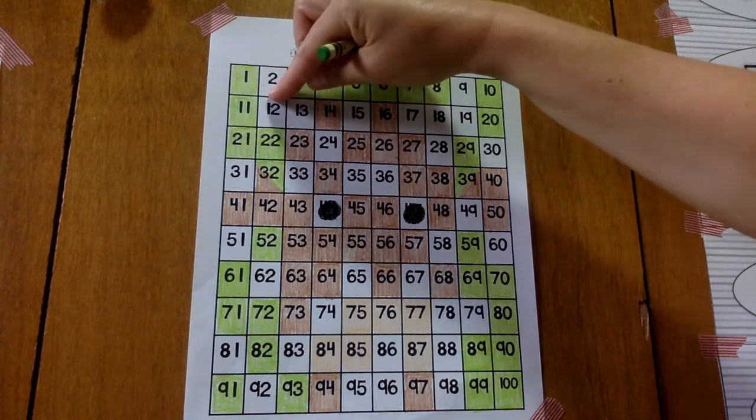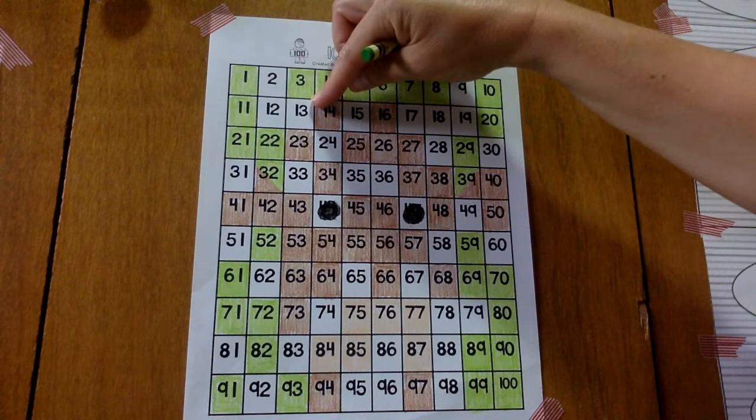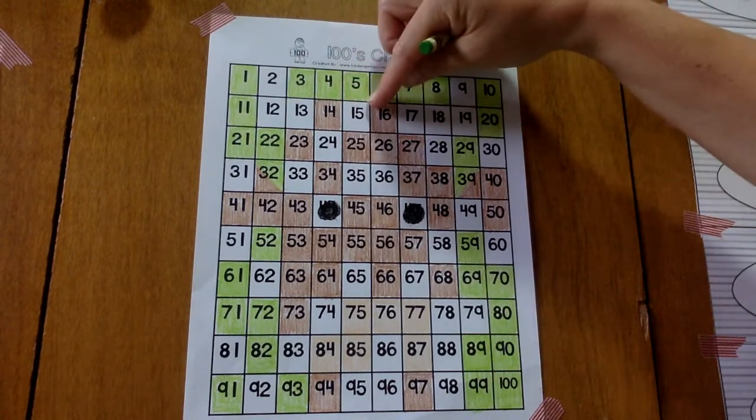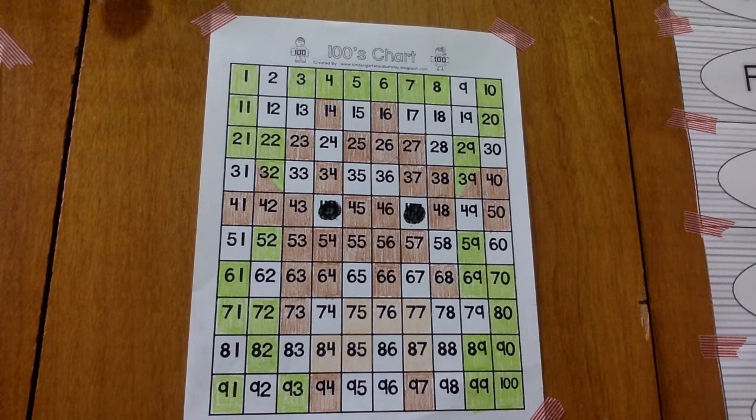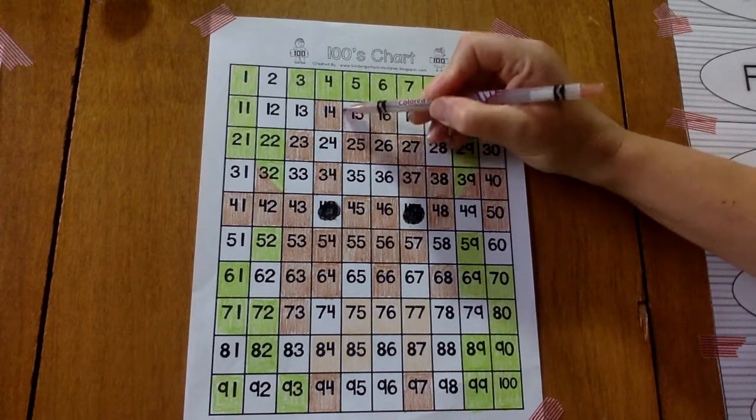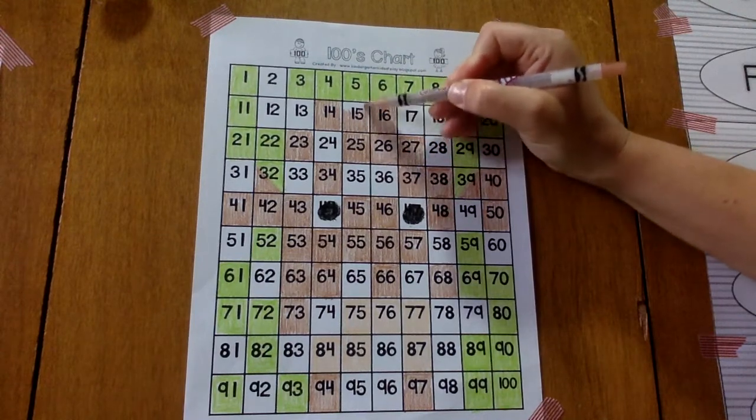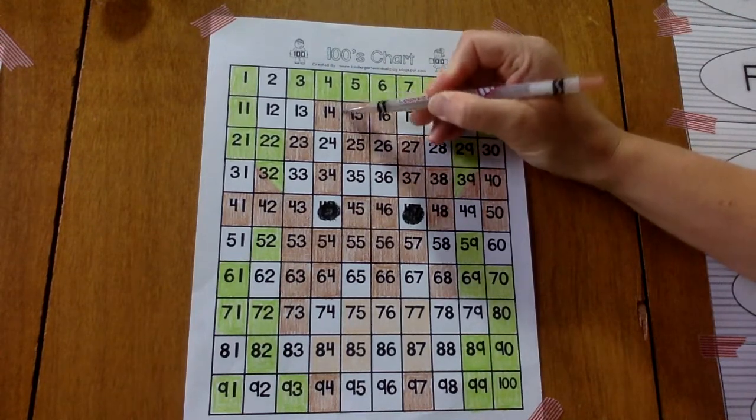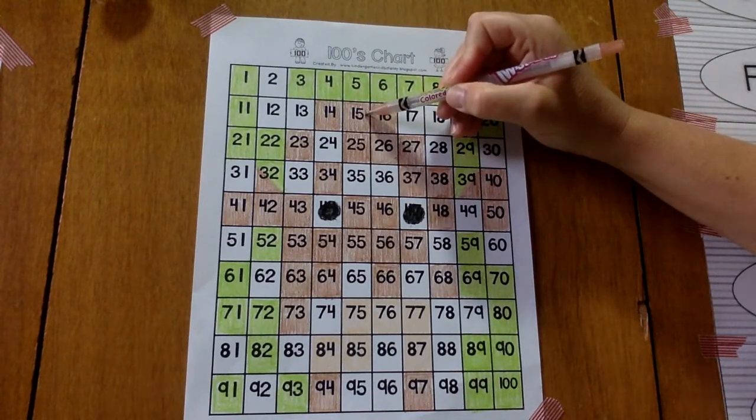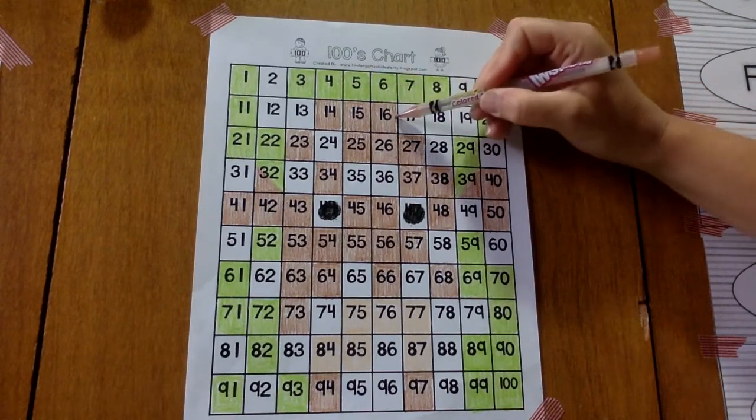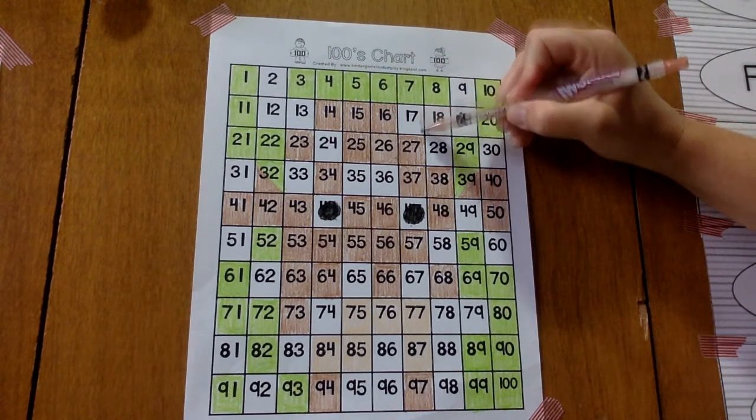11, 12, 13. 13 is going to stay white. 14, 15. 15 is brown. We're on 15, so next is 16, 17. 17 is brown.